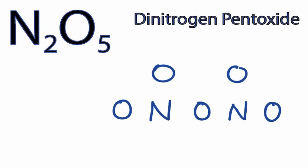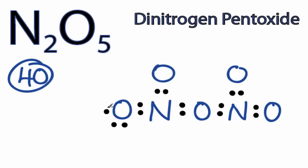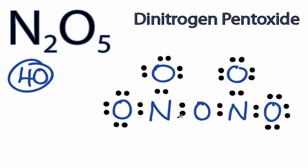That's the skeleton structure for N2O5, and we have a total of 40 valence electrons to work with. First, we'll put two between atoms to form chemical bonds. We've used 12 valence electrons, and then we'll go around the outside and fill the atoms until we've satisfied their octets or we've run out of valence electrons. So that's 36 valence electrons, then 38, and then 40.